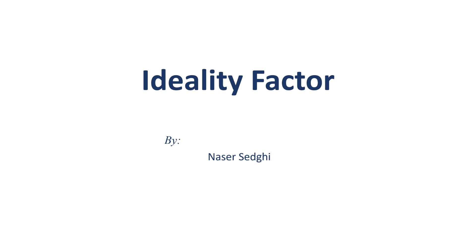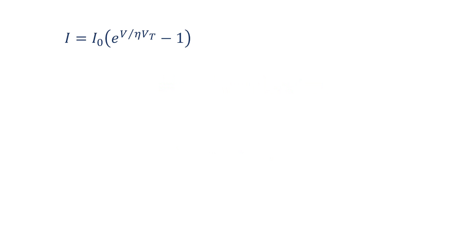Hi everyone. In the p-n junction diode equation, there is a term shown by Greek letter eta called ideality factor. In this video, I will explain what the ideality factor is, where it is coming from, and what its impact on the diode characteristics.